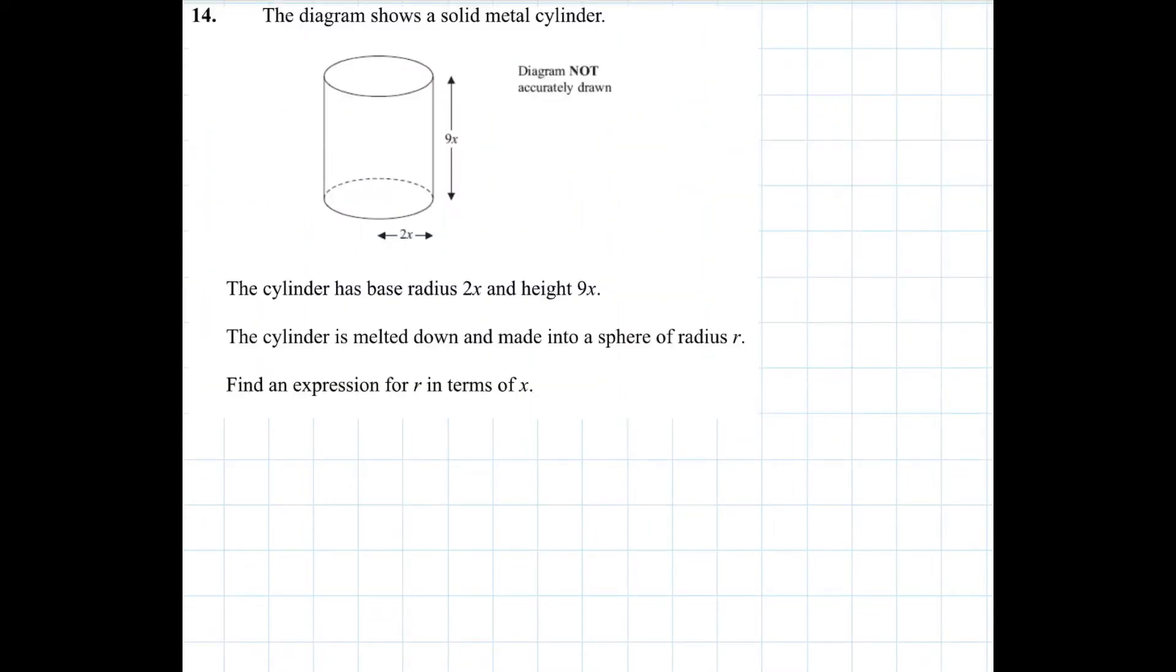So here is the question let's have a read. The diagram shows a solid metal cylinder. The cylinder has base radius 2x and height 9x. The cylinder is melted down and made into a sphere of radius r. Find an expression for r in terms of x.